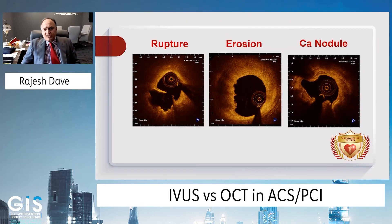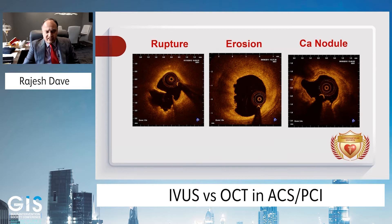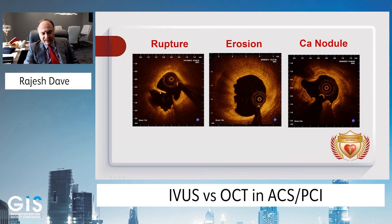Looking at OCT images in these situations: rupture is always characterized by a disruption of the fibrous cap, as shown by the arrow here, and there is a large cavity formation. This is a classic example of a rupture.